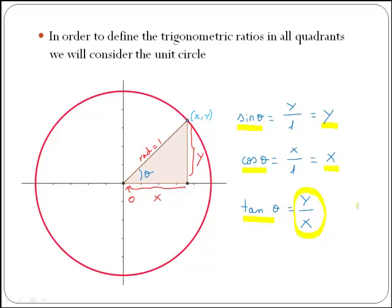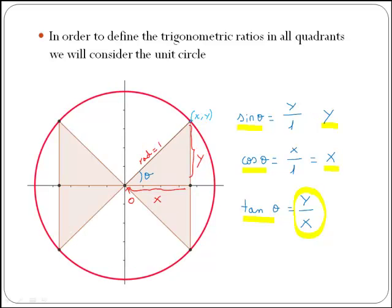If you want to know what happens with trigonometric ratios of angles above 90 degrees, the only thing you have to think about is what happens with the x and y coordinates when you are in the second, third, and fourth quadrant. If you consider the right angle triangle placed in the other three quadrants, you will realize that the sides are exactly the same, and the only thing that changes is that x and y change signs. In the second quadrant, x is negative while y is positive. In the third quadrant, both x and y are negative. And in the fourth quadrant, x is positive while y is negative.